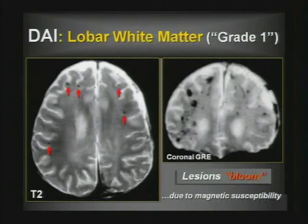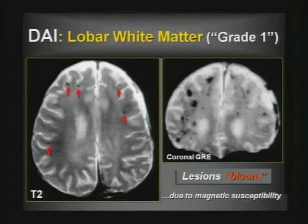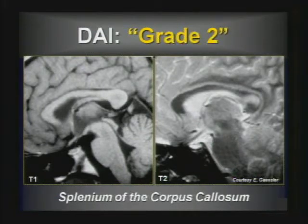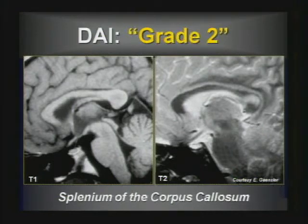SWI and gradient sequences are particularly good for anything leaving blood in its wake, such as amyloid angiopathy or diffuse hemorrhagic axonal injury. Grade 2 DAI involves the corpus callosum — these patients are more severely injured. Grade 1 lobar white matter patients may walk out of the hospital that day even with a diagnosed hemorrhagic shearing injury. The callosal injury is typically the splenium.